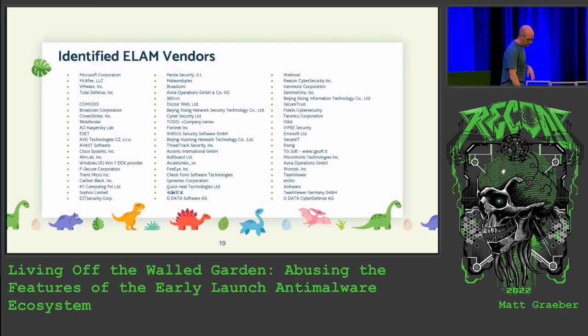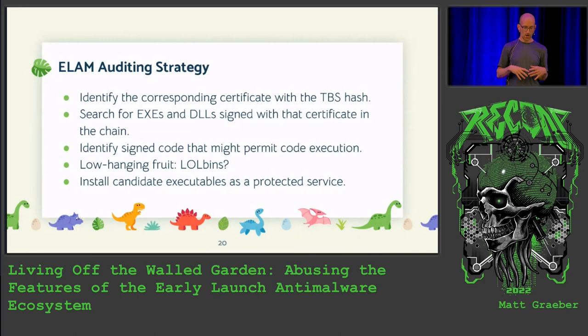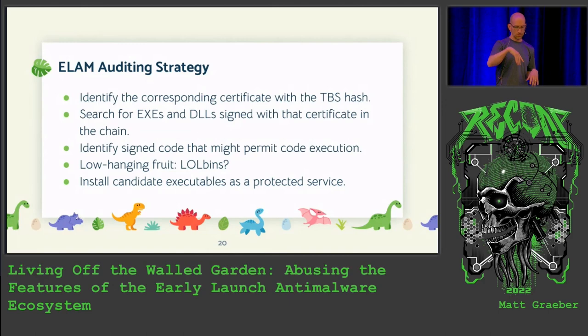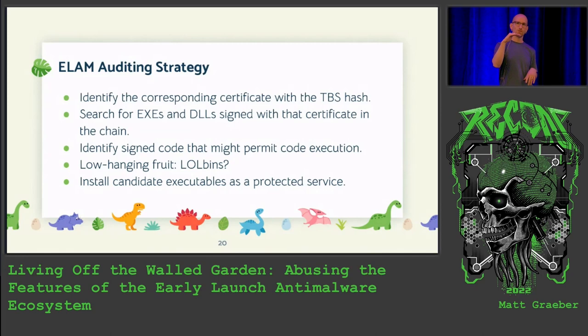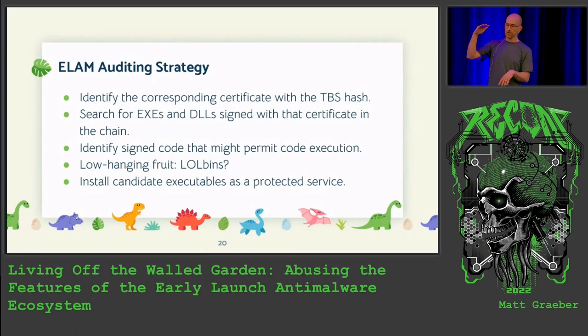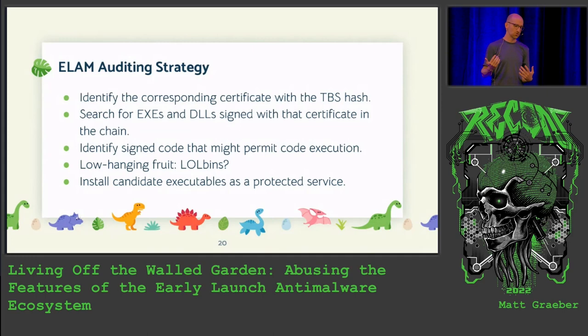My auditing strategy was to parse and dump all TBS hash allow rules from all 766 drivers, convert to JSON, and search through them. One thing I looked for was certificate hashes that cross vendor boundaries — for example, why would a Carbon Black ELAM driver contain the same certificate hash as an AVG driver? That wasn't actually the case, but that was the kind of anomaly I was interested in finding.